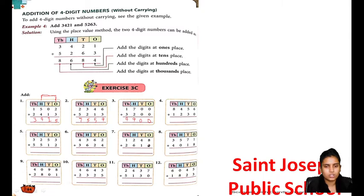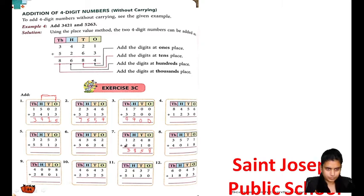Now I am taking the 7th question. 8 plus 0 is 8. 4 plus 1 is 5. 6 plus 2 is 8. 1 plus 2 is 3. Now I am doing this question: 7 plus 0 is 7. 3 plus 3 is 6. 1 plus 4 is 5, 2 plus 5 is 7.